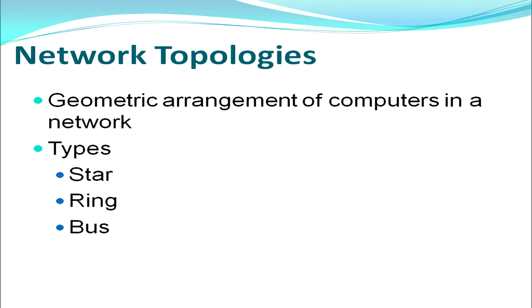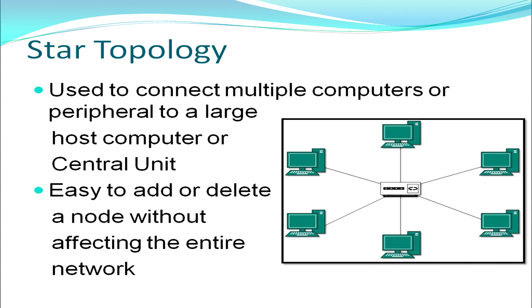We move on to network topologies. A topology is the geometric arrangement of computers in a network. We can arrange computers in star topology, ring topology, or bus topology. In star topology, there is a central computer called a server, and all other computers — called nodes or workstations — are connected to it. The entire network is dependent on the central unit. It is easy to add or delete a node without affecting the entire network, which is a big advantage.